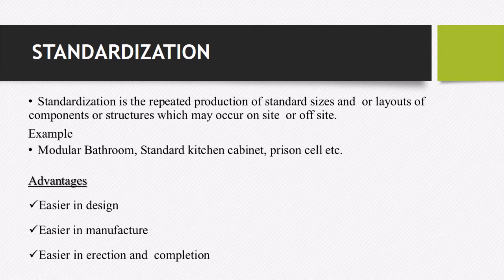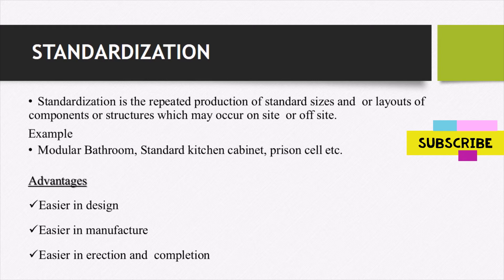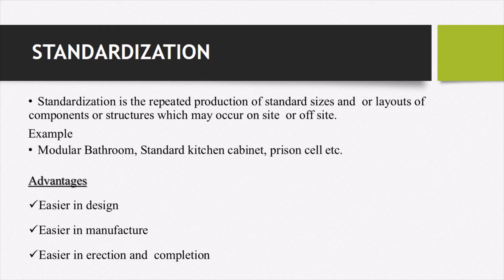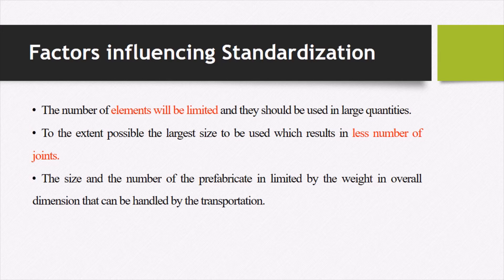What are the advantages of standardization? It makes things easier in design, manufacture, and erection. If it goes in a standardized way, it is the easiest way for designing. For manufacturing, the mold can be used for various components and you can go for mass production. For erection, if you go for the same type of components in similar sizes, the crane used for lifting will be the same one, making erection and completion easier.